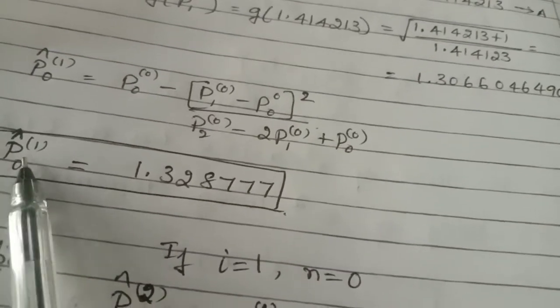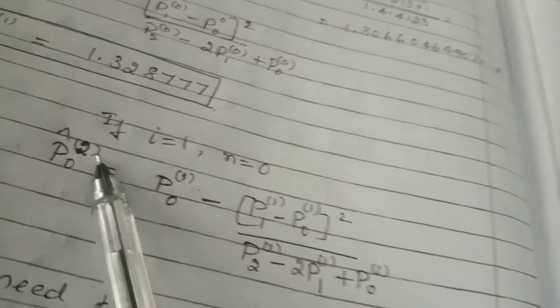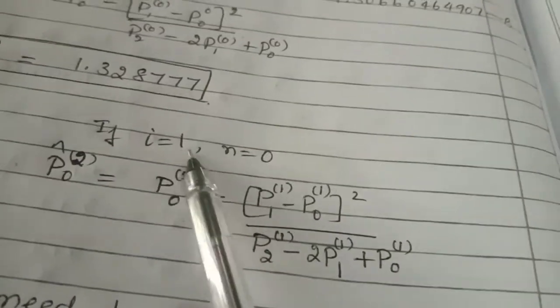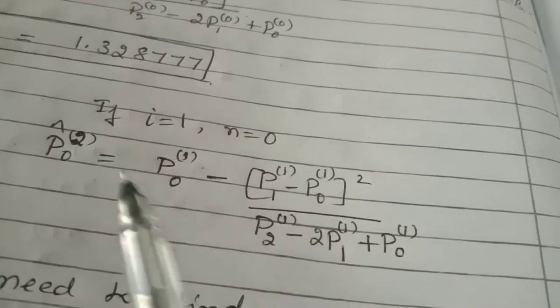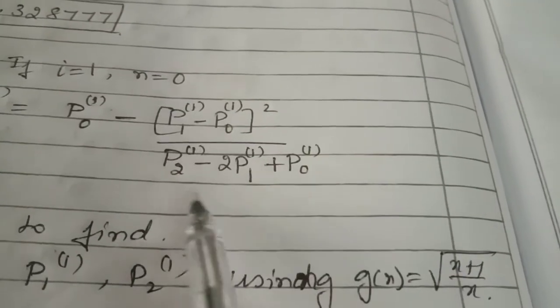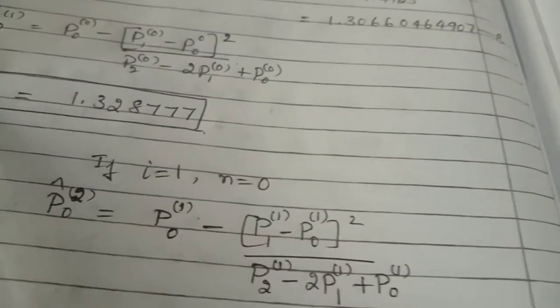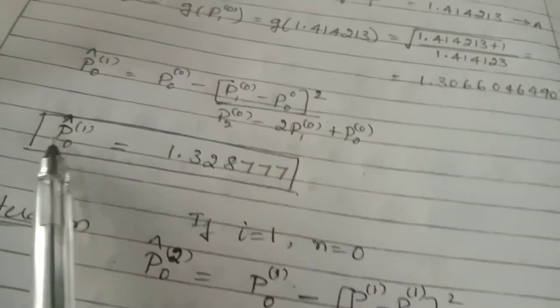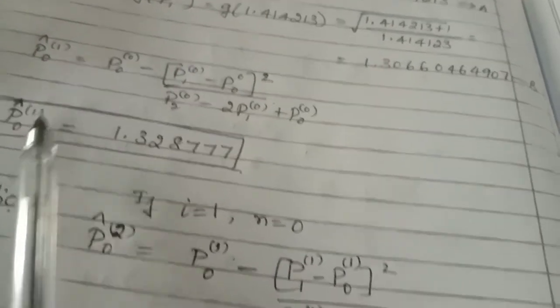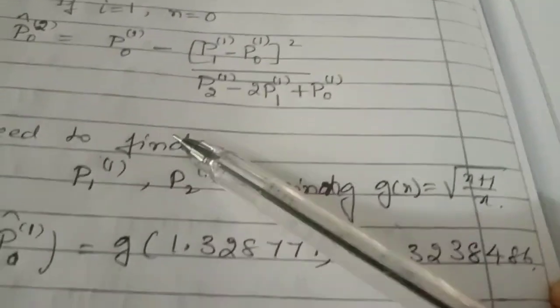Now we need to find the P₀ cap value at the second iteration. For the second iteration, we take i = 1 and N = 0. We know P₀(1) = 1.328777 (just calculated). We don't know P₁(1) and P₂(1), so we need to find them using the fixed point function.